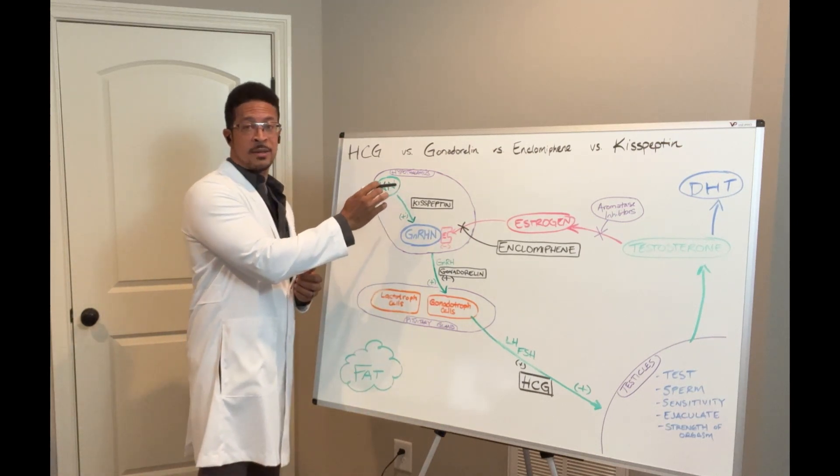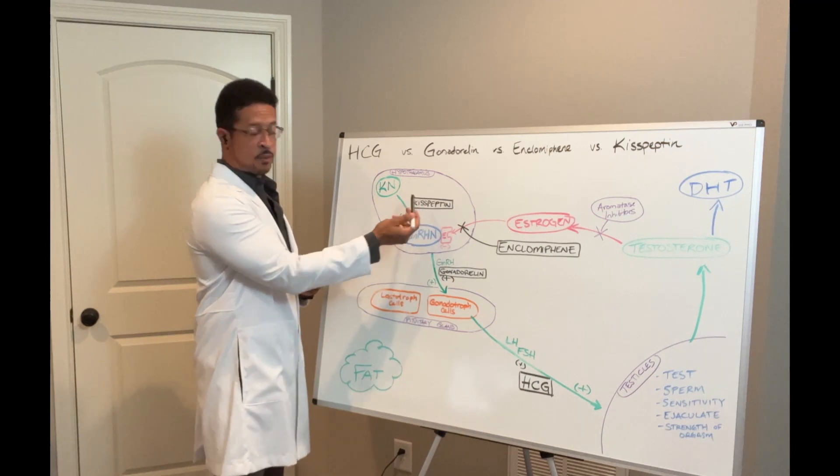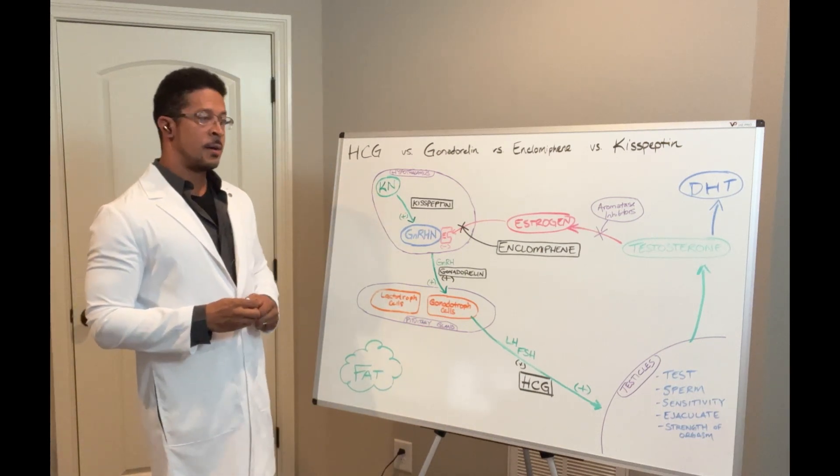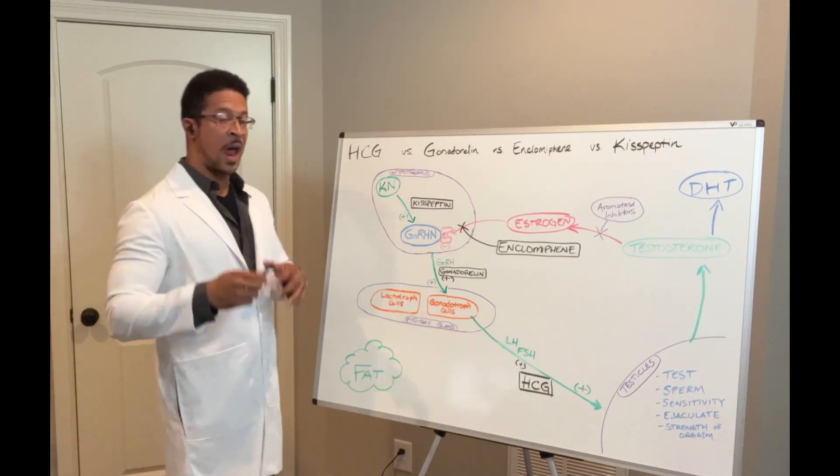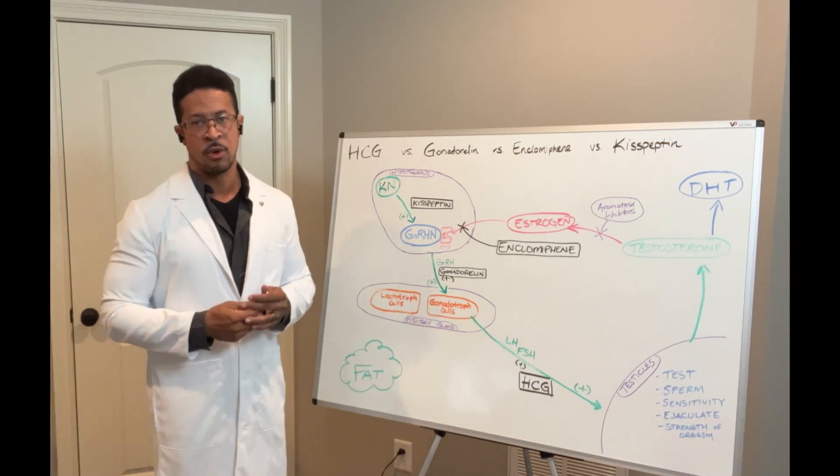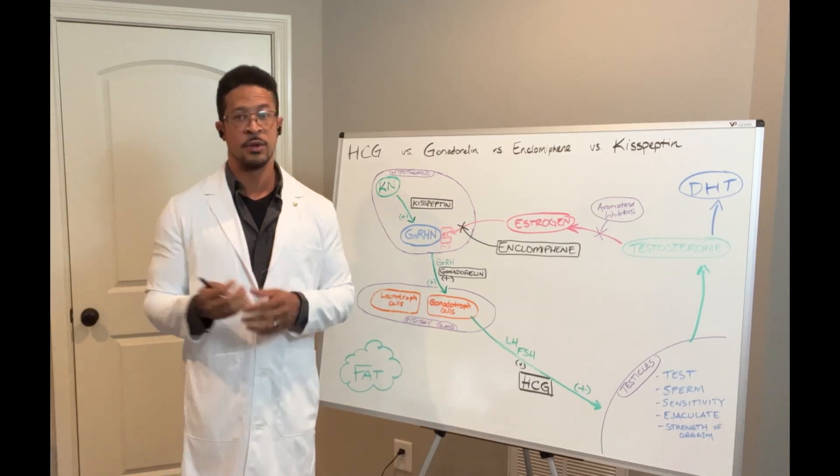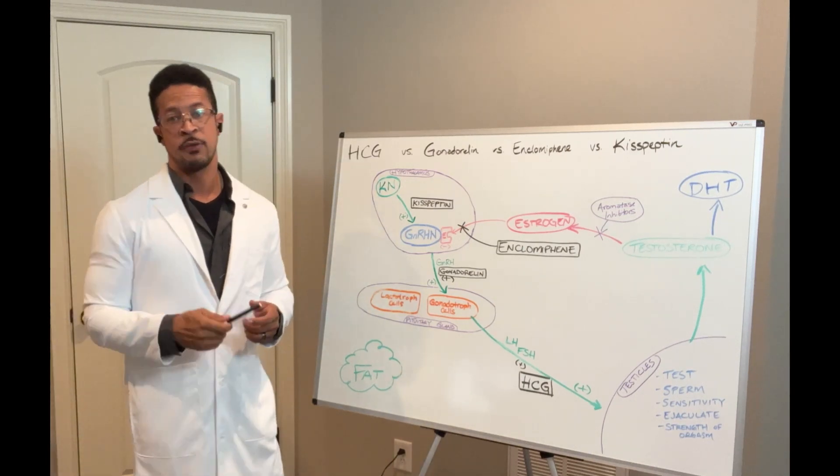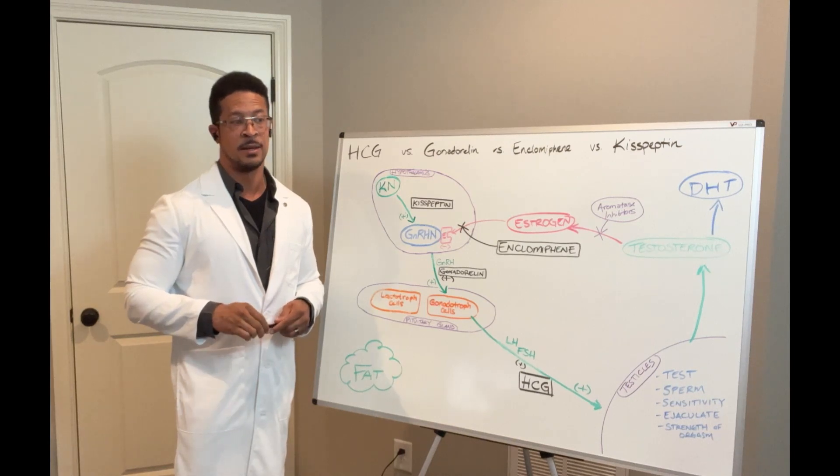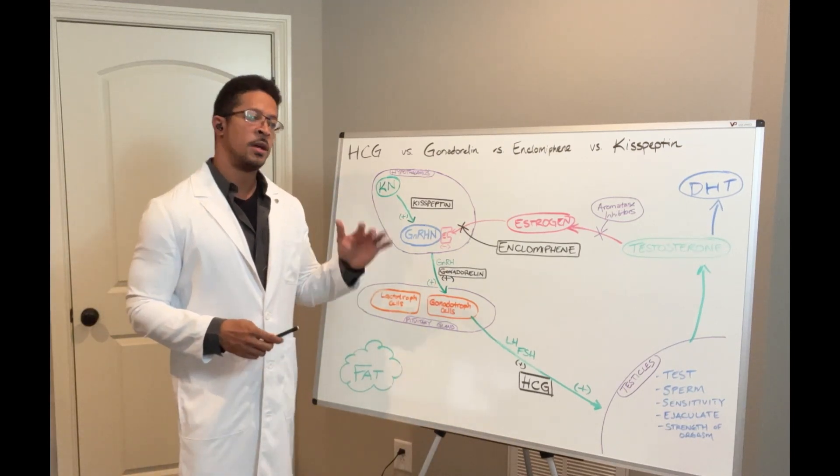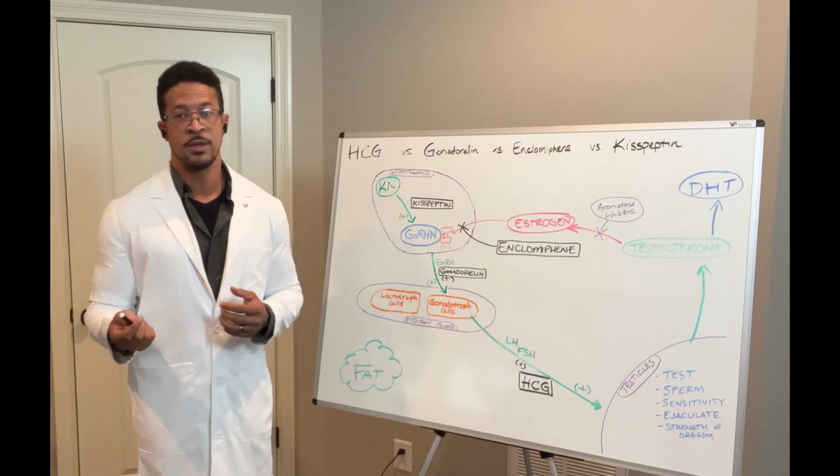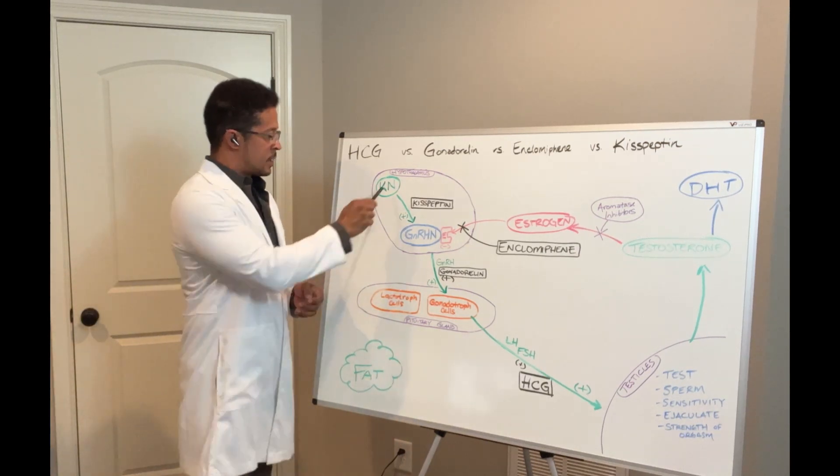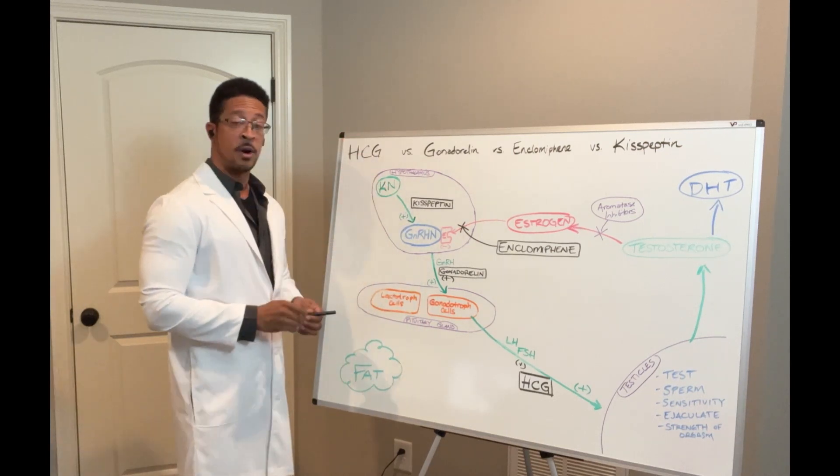It starts with a kisspeptin neuron, which makes kisspeptin actually. Right in here, kisspeptin is actually produced inside the body. Now, if this is where the problem is, step one, then supplementing with kisspeptin right in here stimulates more of this activity from step one. So I like kisspeptin. It's very natural to use. It has a rather short half-life, so you do need to take it more often.